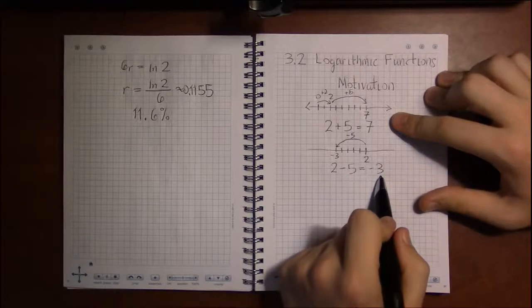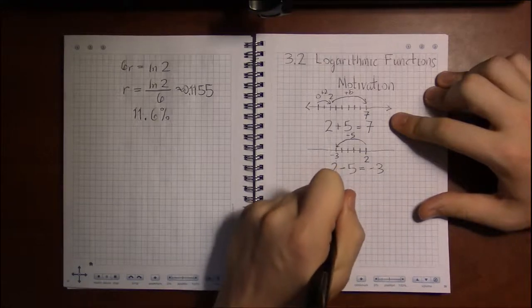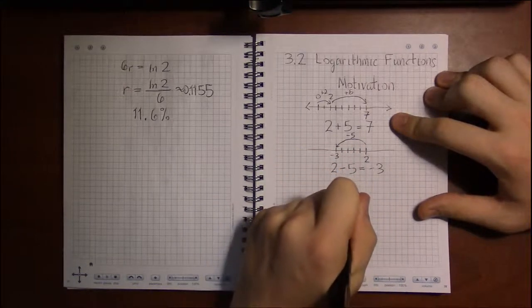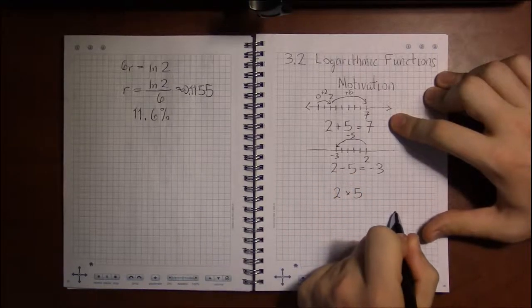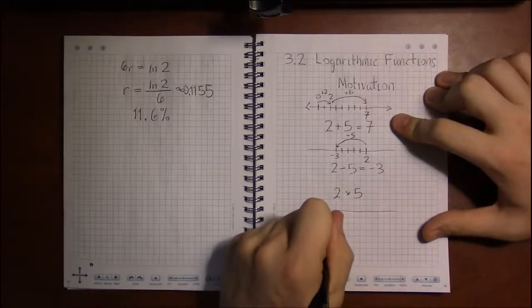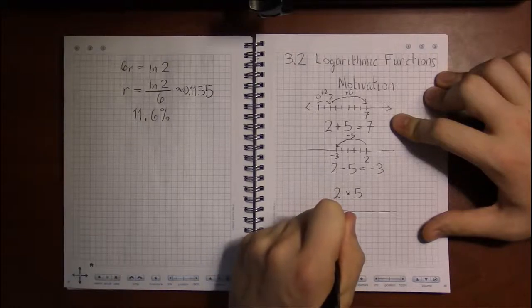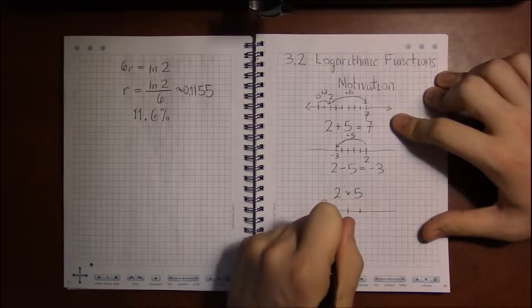Then we started counting, not by plus 1s, but by plus ns. So, for example, 2 plus 5, you would start at 0, and then do 5 plus 2s.